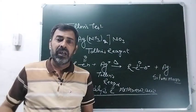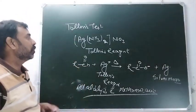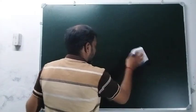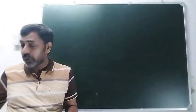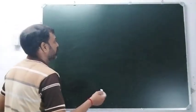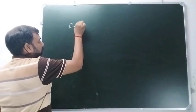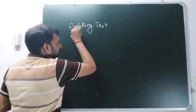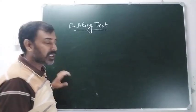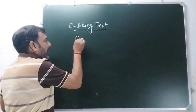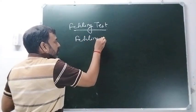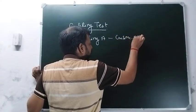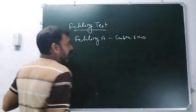Next identification test for the aldehydes - that is the Fehling test। तो हमारा next test है Fehling test। और Fehling test के लिए जैसे Tollens test के लिए Tollens reagent की जरूरत पड़ी, Fehling test के लिए Fehling reagent की जरूरत पड़ती है।